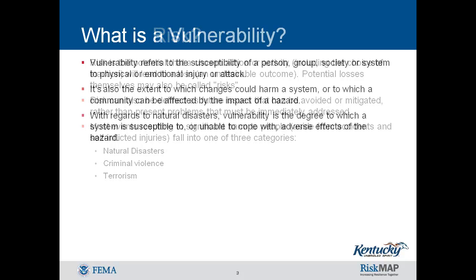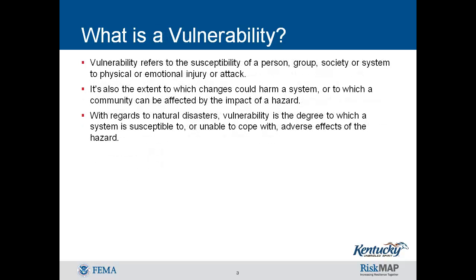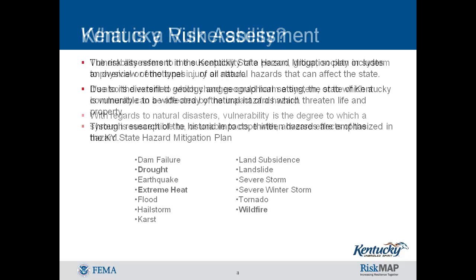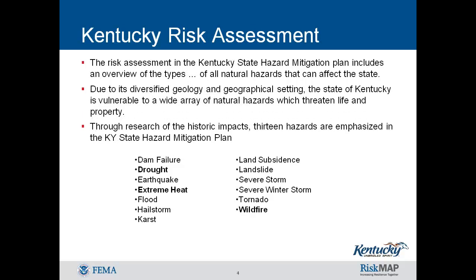Vulnerability refers to the susceptibility of a person, group, society, or system to a risk, such as physical or emotional injury or attack. It's also the extent to which changes could harm a system or to which a community can be affected by the impact of a hazard. The risk assessment in the Kentucky State Enhanced Hazard Mitigation Plan includes an overview of the types of all natural hazards that can affect the state.